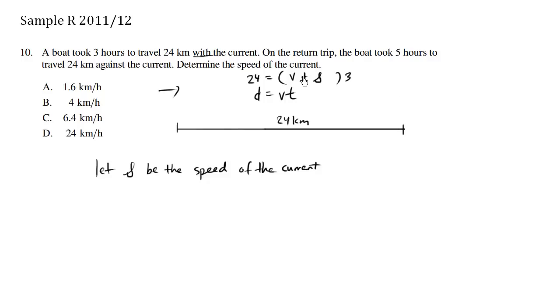On the return trip going this way, the boat took five hours. So we still have the same distance: distance equals velocity times time. So we still have 24 equals some velocity times the time, which is five.